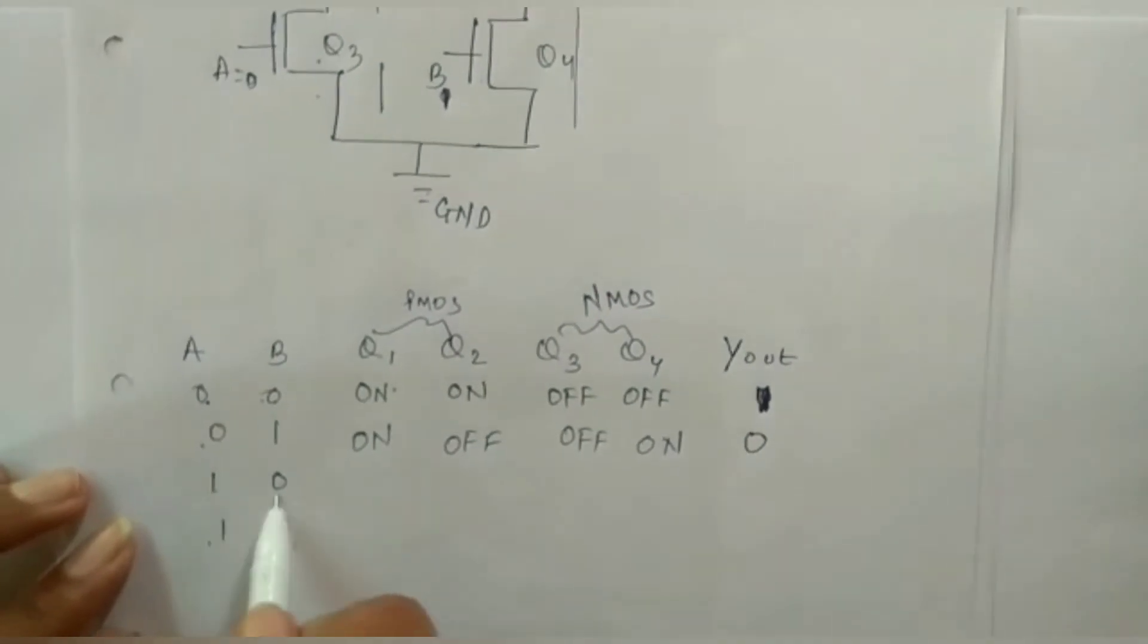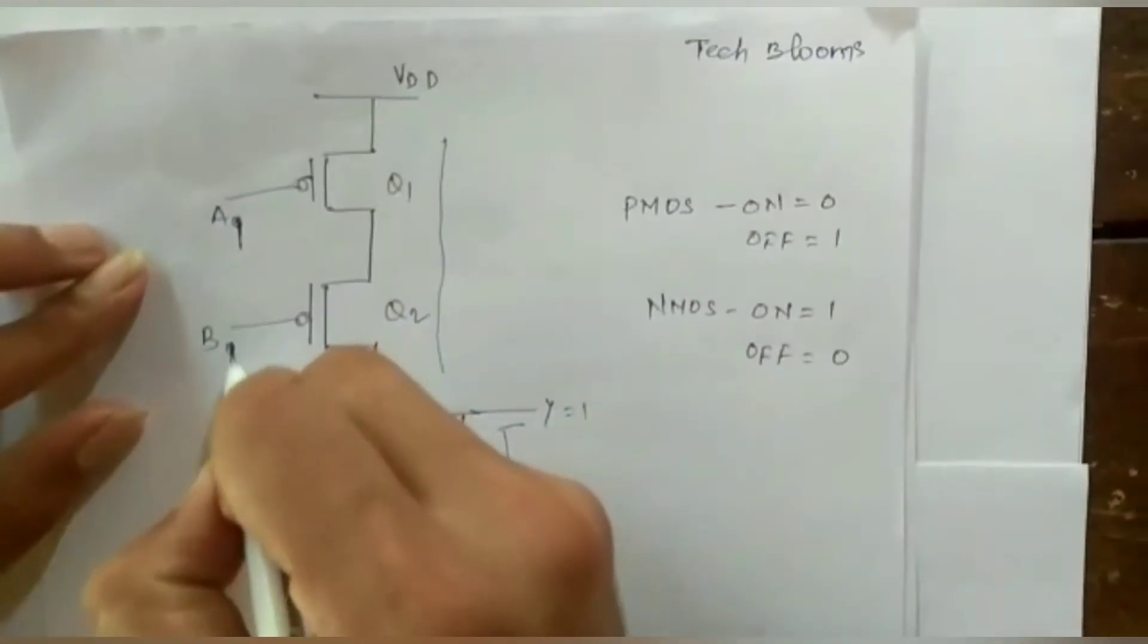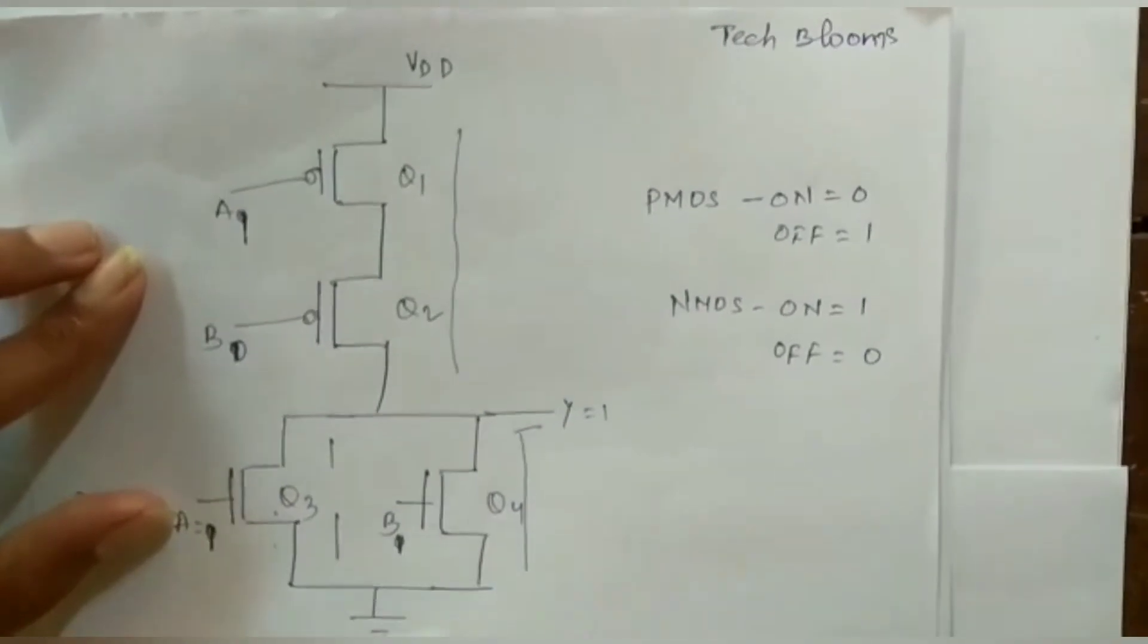For this one 1, 0. A is 1, B is 0, A is 1, B is 0.